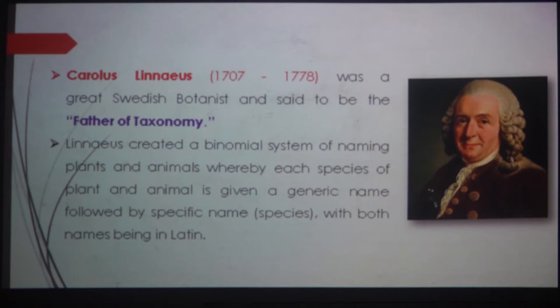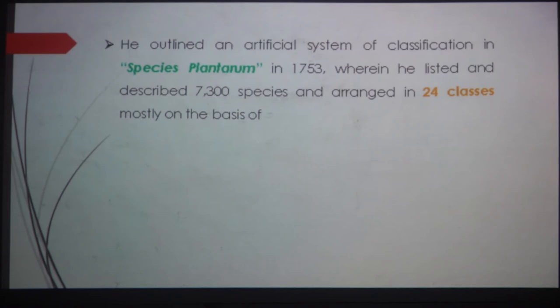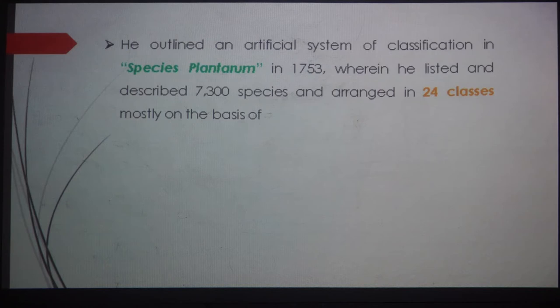Linnaeus created a binomial system of naming plants and animals, whereby each species of plant and animal is given a generic name followed by a specific epithet — the species name — with both names being in Latin. Because he started giving two names to each organism, the binomial system was started by him. Because of this great work he is considered the father of taxonomy. He outlined an artificial system of classification in his book Species Plantarum.